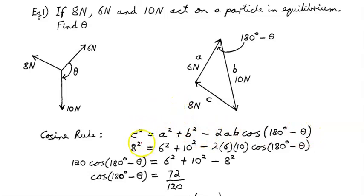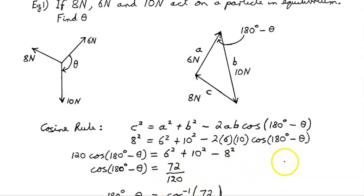Let's substitute in the value. 8 squared is 6 squared plus 10 squared minus 2 times 6 times 10 times cos of 180 degrees minus theta. Take this over the other side, so 120 times cos of 180 minus theta is 6 squared plus 10 squared minus 8 squared. Sum all that, divide by 120, and we end up with 72 on 120.